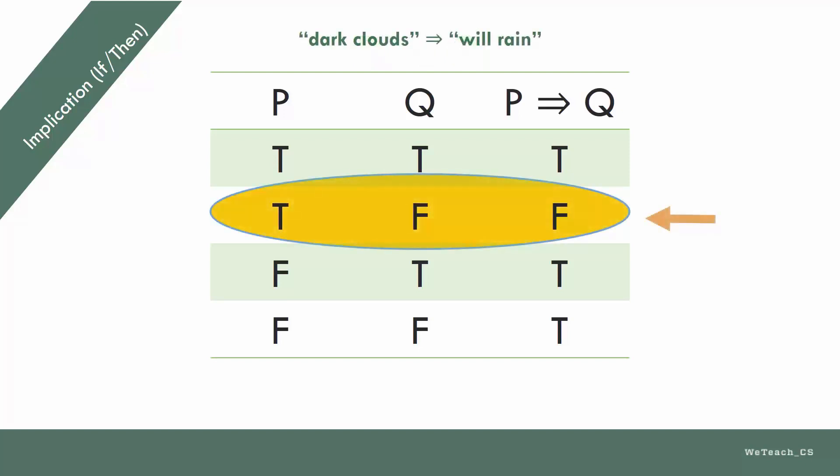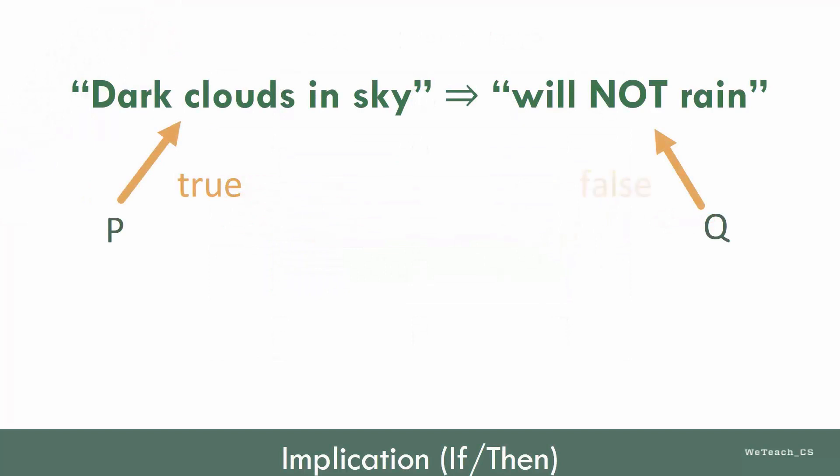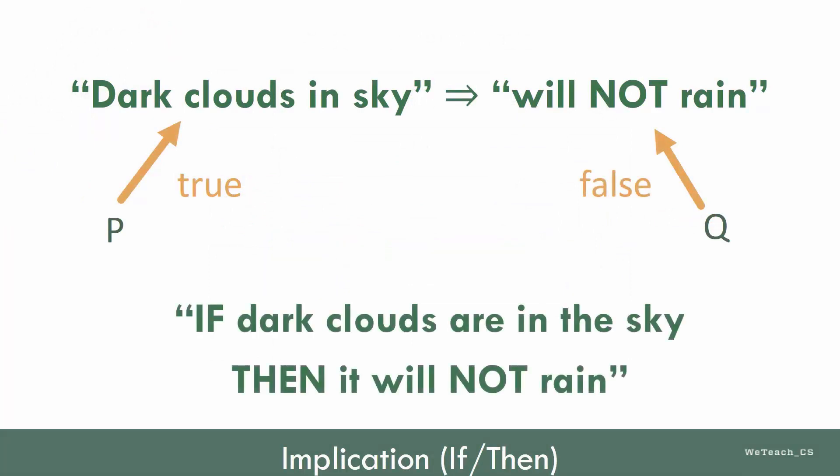Here's what a completed implication table looks like. In the second row, P is true, but Q is false. This contradicts the rules of implication, in that when P is true, Q is always true. Therefore, this is a false statement altogether. It is not possible, according to this implication, that there are dark clouds and it is not raining. Make sense?